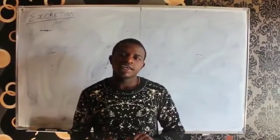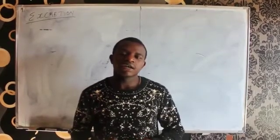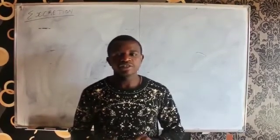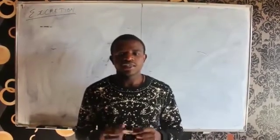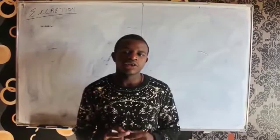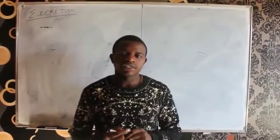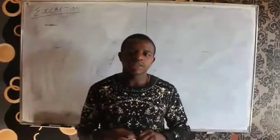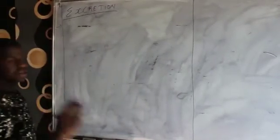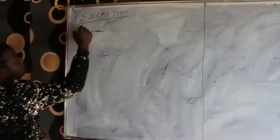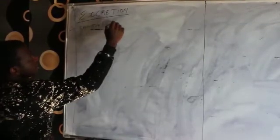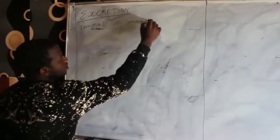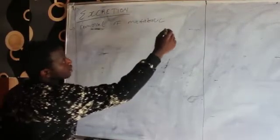The main excretory products are mainly removed through urine. So let me write those points on the whiteboard. Excretion is the removal of metabolic waste from the body.